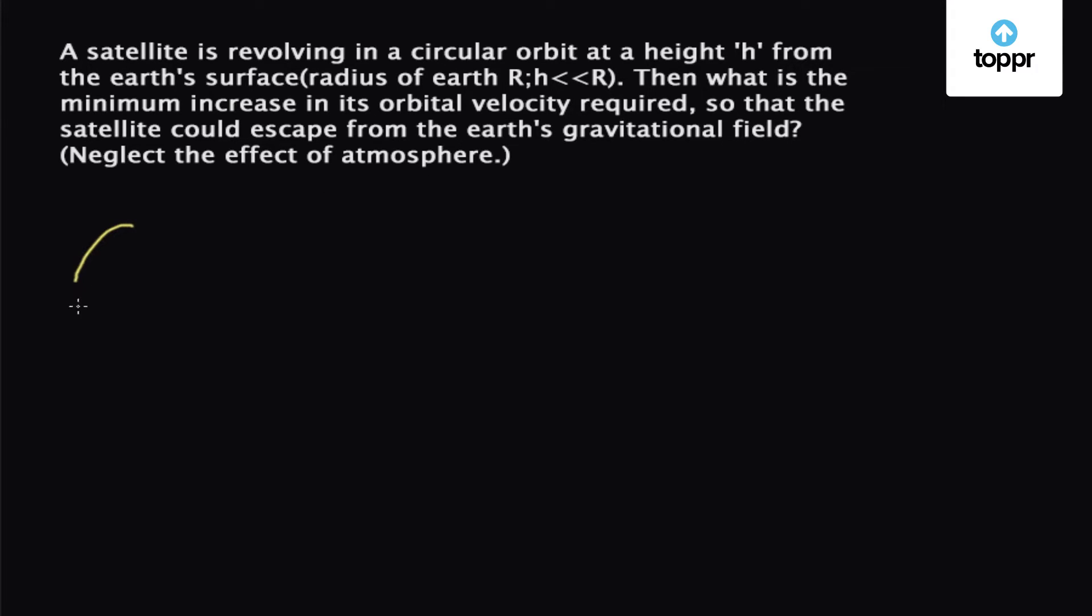So we have the Earth of mass capital M. Its radius is R. Then at a height h, a satellite of mass small m is revolving at a speed of v which is the orbital velocity.